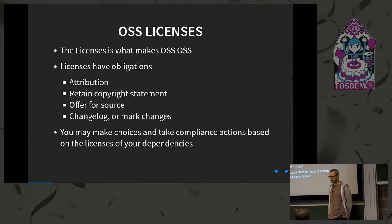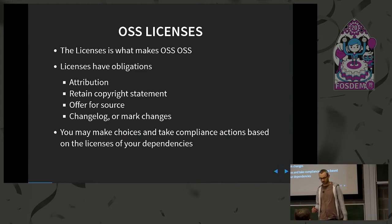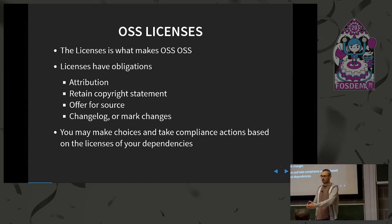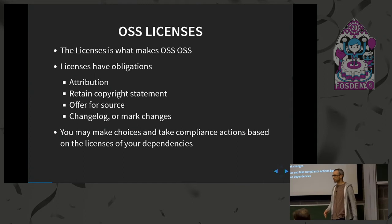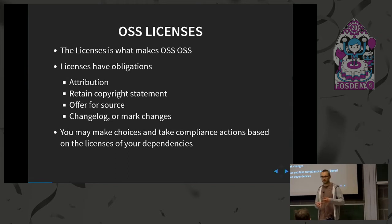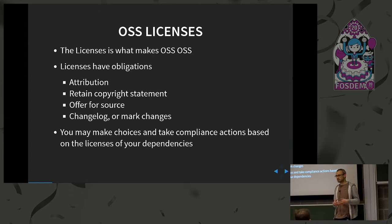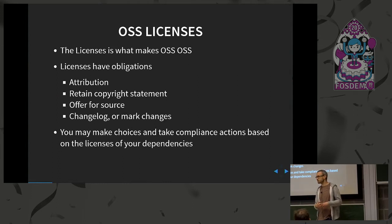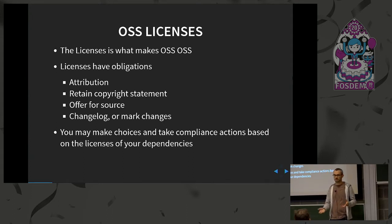Some examples of requirements that licenses have are attribution — which means just say I got this open source from so-and-so — retaining the copyright statement of the open source that you're reusing, potentially giving an offer for the source if you're distributing the binaries, and maybe if you're making changes to the software, maintaining a changelog or marking the changes that you made. Depending on the obligations of the licenses, you may make choices on which dependencies you decide to take on in your project, and choices that affect you or users of your code, your library, your tools.